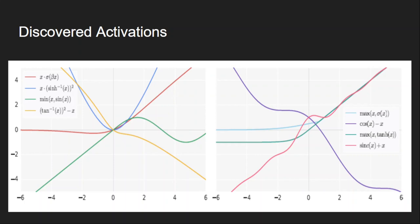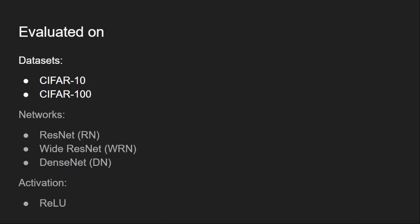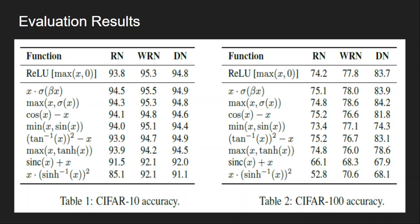They evaluated all these activation functions on CIFAR-10 and CIFAR-100 datasets — two image classification datasets with 10 and 100 categories. They tested on three different architectures and compared accuracies against ReLU, the most popular activation function. Most of the discovered activation functions by Neural Architecture Search outperformed ReLU across all networks in both tasks, demonstrating their generalization capability across different architectures and use cases.